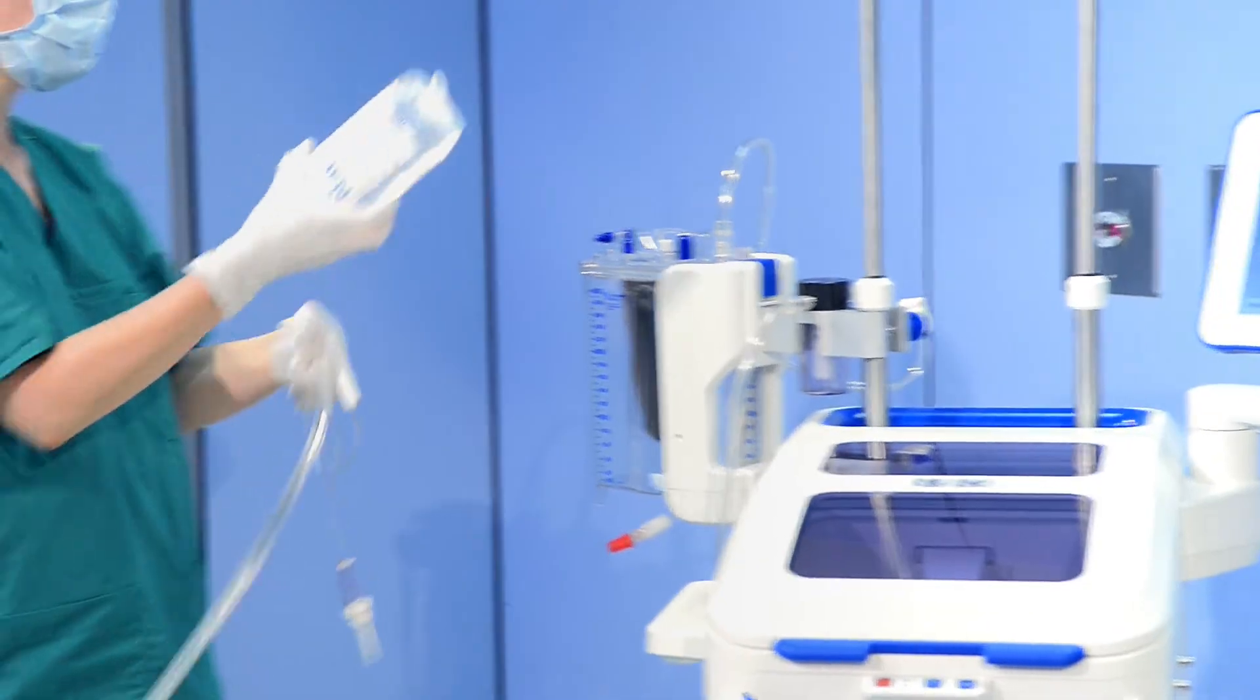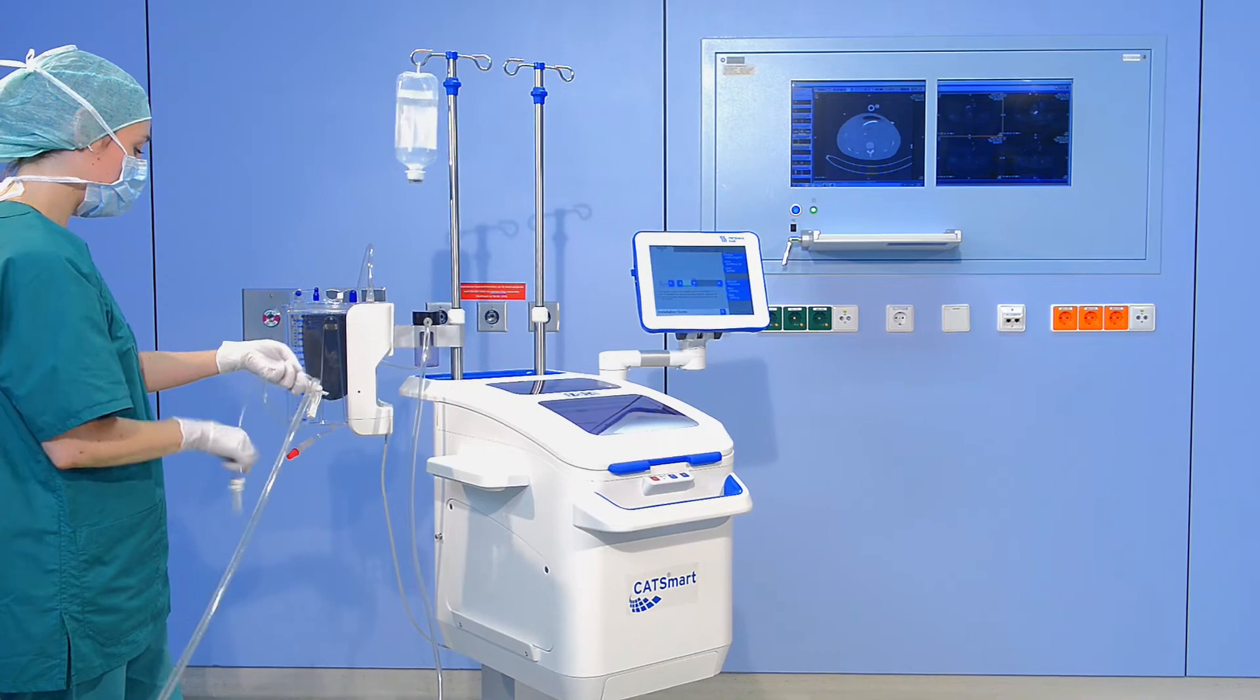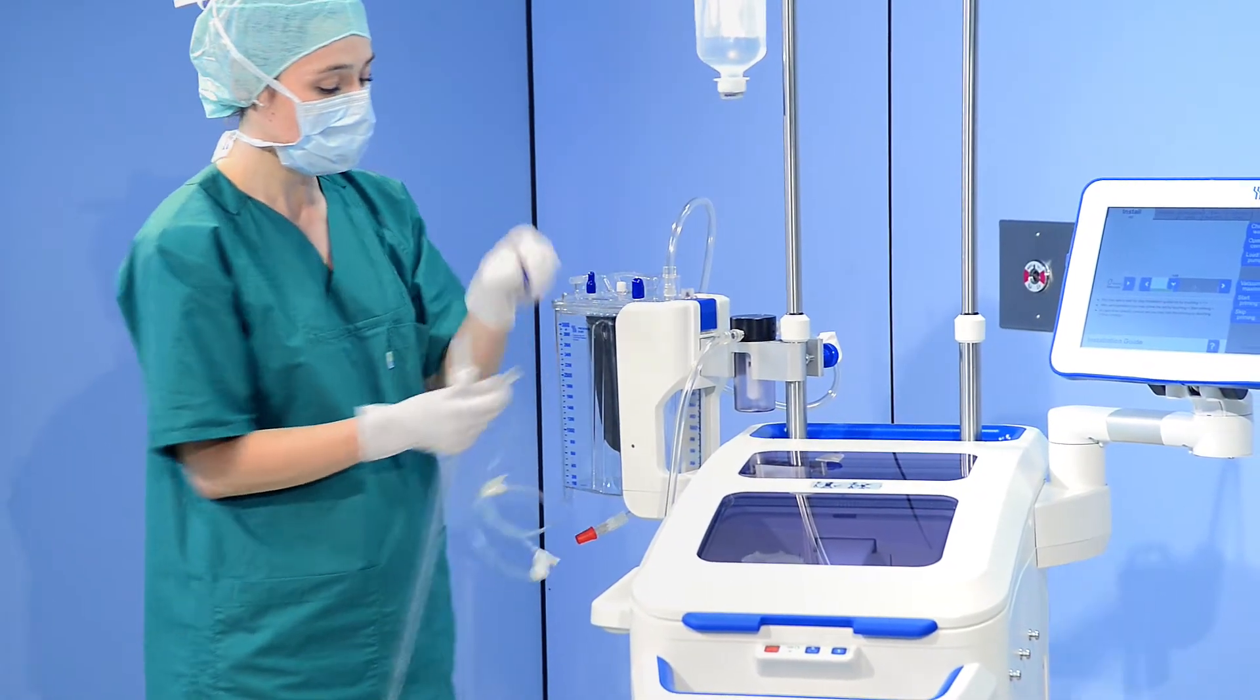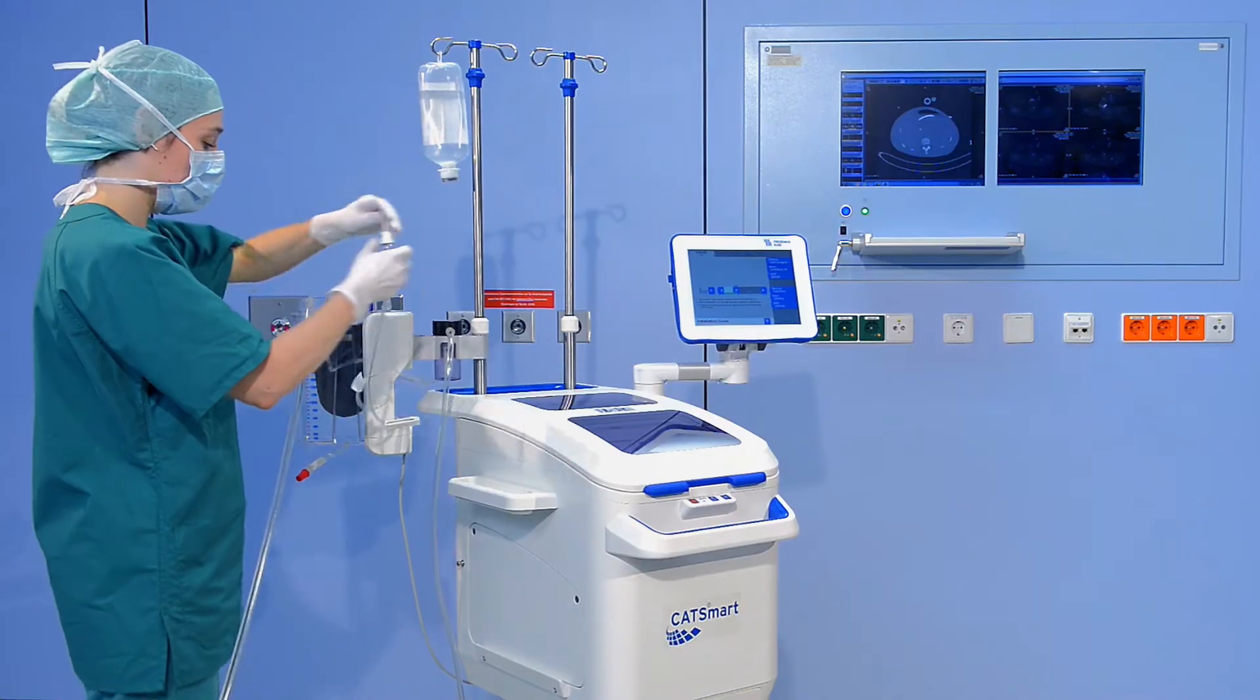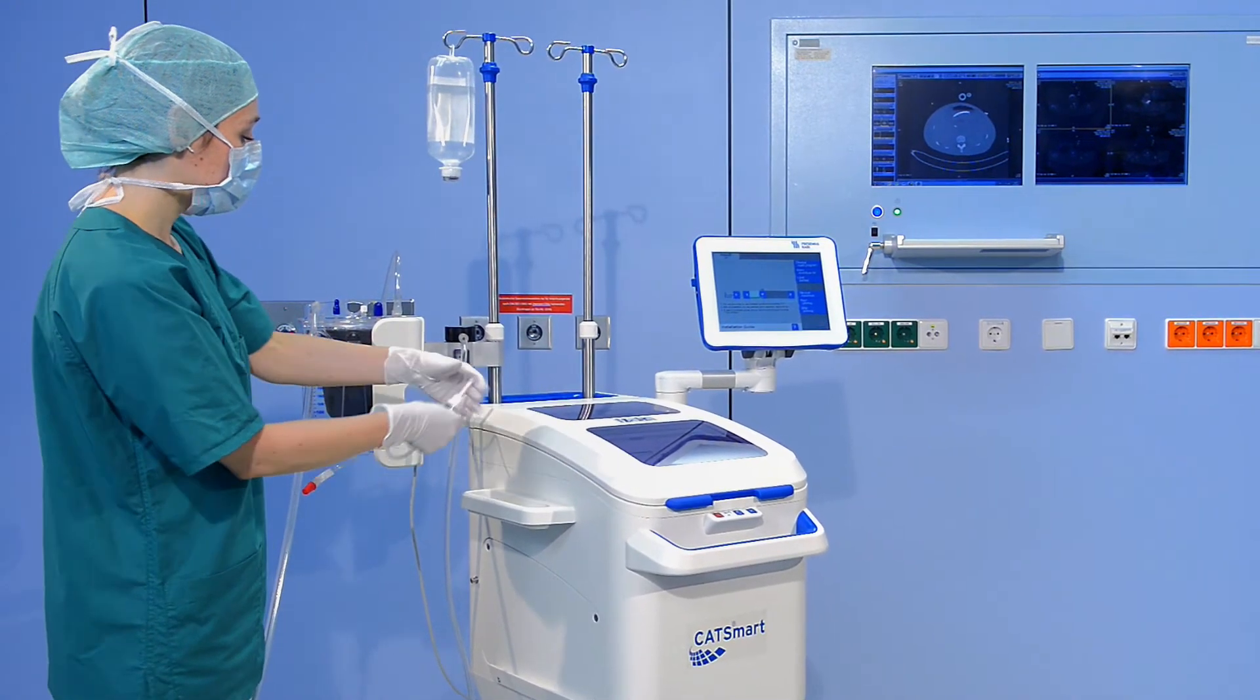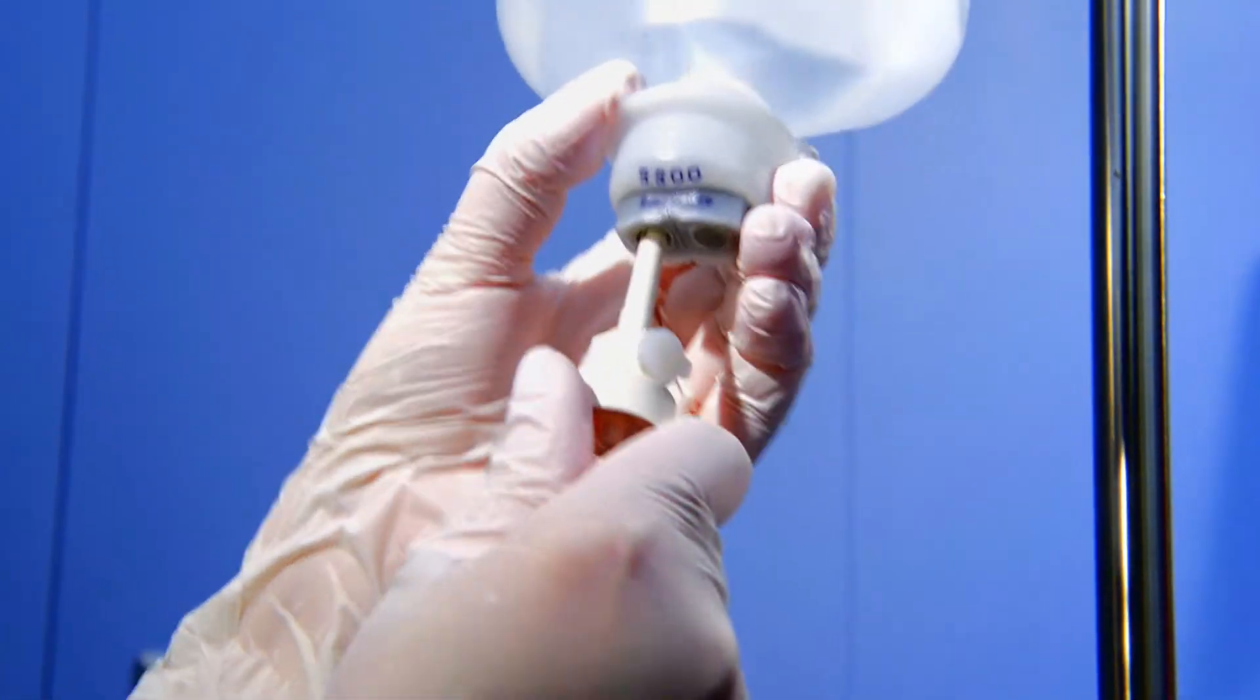Prepare 30,000 units heparin per 1 liter of isotonic saline solution. Connect the adapter to one of the reservoir ports, blue cap. Connect the drip chamber to anticoagulant solution bag using the spike.